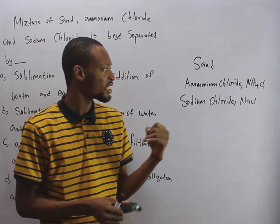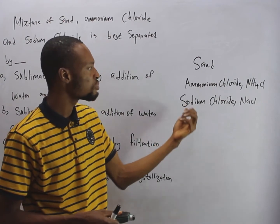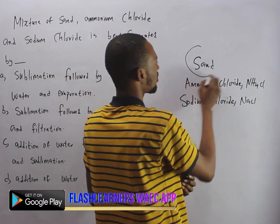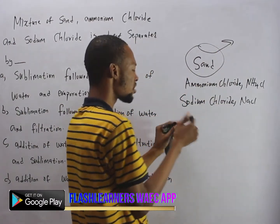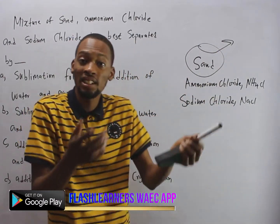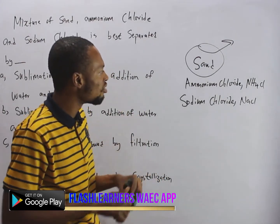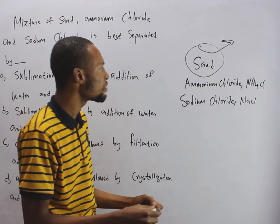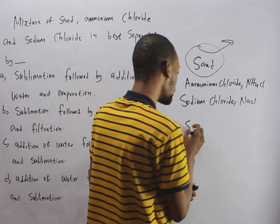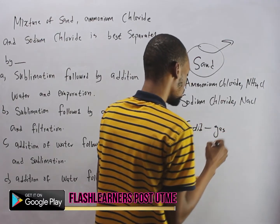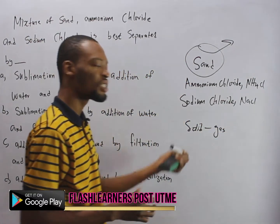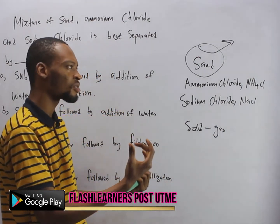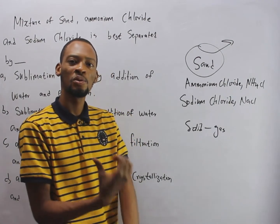Talking about addition of water — if we add water to this mixture, what would happen? Sand doesn't dissolve in water, but sodium chloride, which is salt, dissolves happily in water. Now, ammonium chloride can undergo sublimation. Sublimation is simply the change of state from solid to gas without passing through the liquid state. So ammonium chloride and some other compounds and elements undergo sublimation.